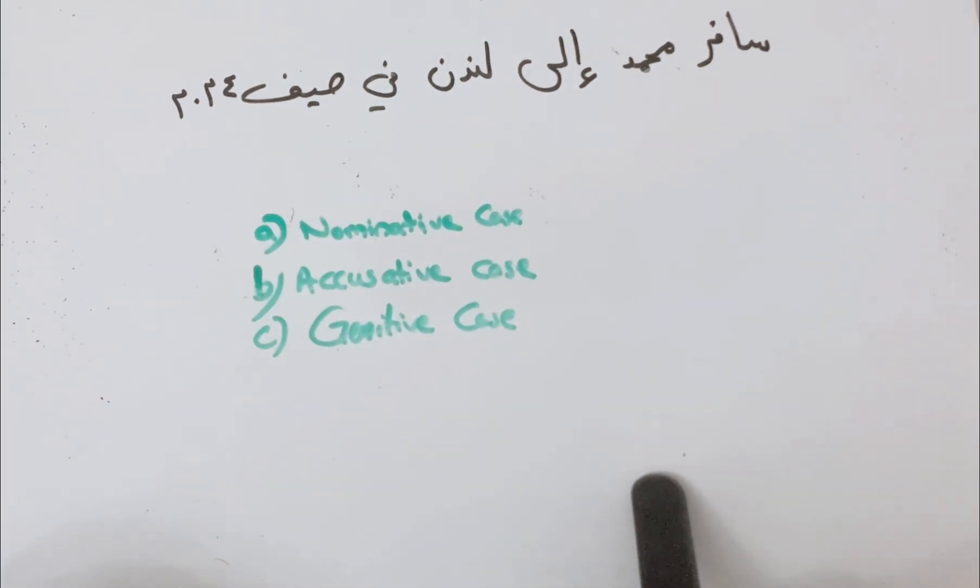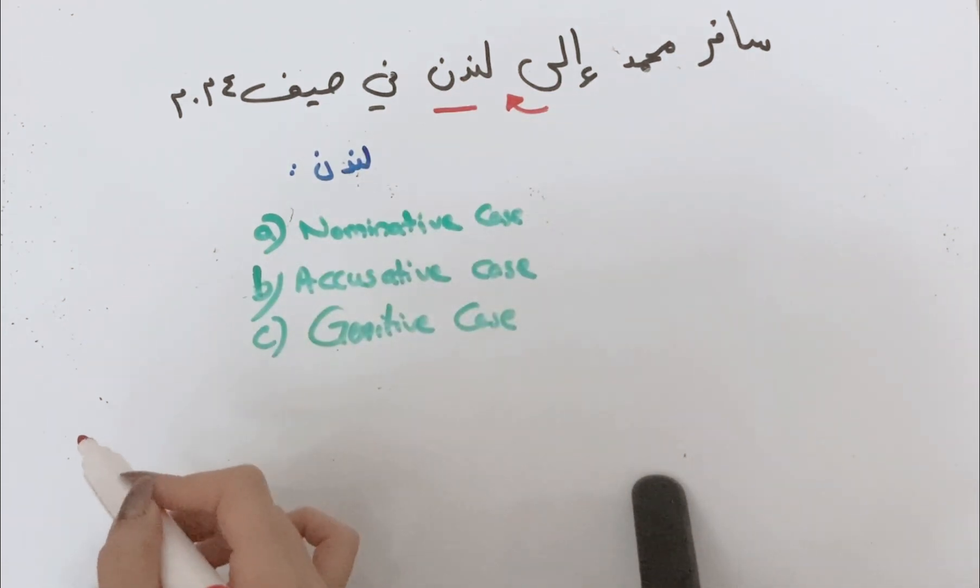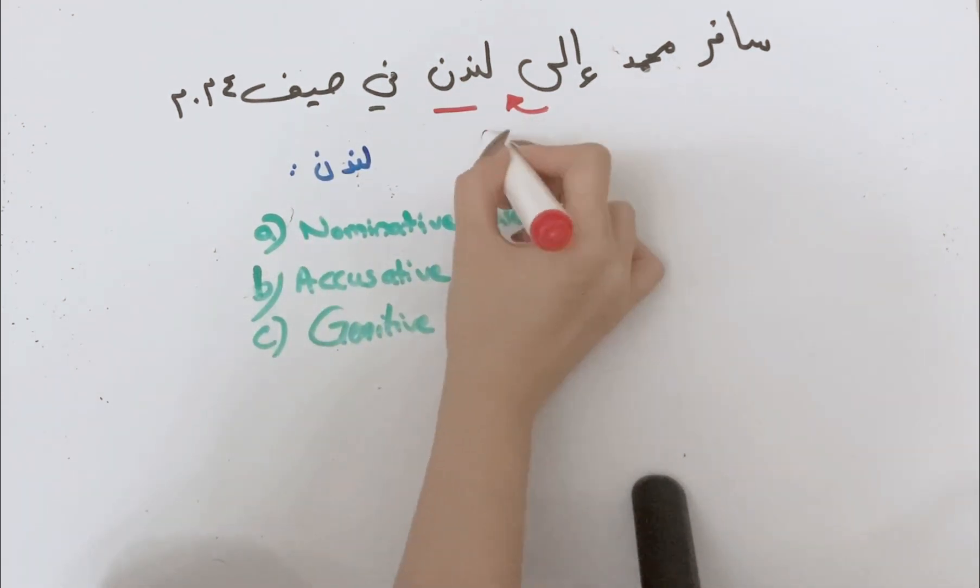Next I want you to identify London. Is it a nominative, accusative, or genitive? London is an object of a preposition, ism majroor, which means it is a genitive case, majroor.